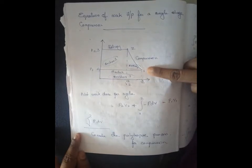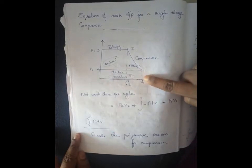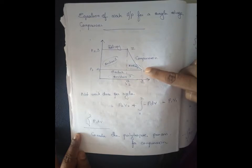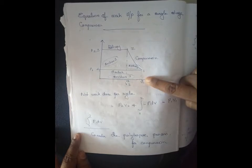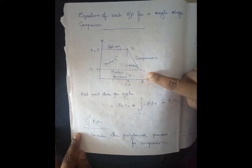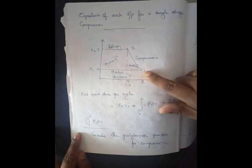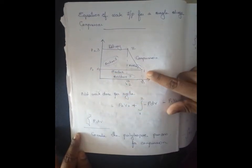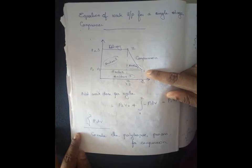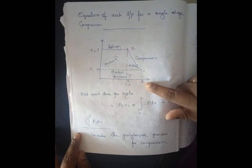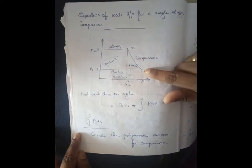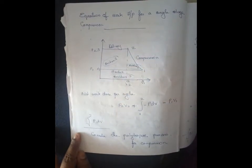Pressure is P1, volume is V1. The suction stroke brings air into the cylinder. The second property is V1, and pressure is P1. Polytropic compression occurs from point 1 to point 2.